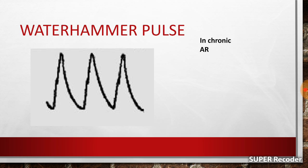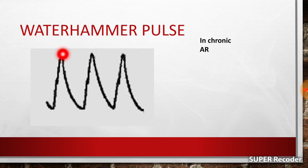The waterhammer pulse, also called Watson's waterhammer pulse or Corrigan pulse, is seen in chronic aortic regurgitation. You will see a rapid upstroke, no dicrotic notch, and then a sudden rapid downstroke. In aortic regurgitation, a large volume of blood is pushed at high velocity into the aorta — seen as the rapid upstroke. As diastole of the left ventricle starts, there is no closure of the aortic valve, and because of the negative pressure created by the left ventricle, blood gushes back, causing a sudden downstroke. Note that the waterhammer pulse is seen only in chronic, not acute, aortic regurgitation, because compensatory dilatation of the left ventricle must occur to accommodate the volume overload.